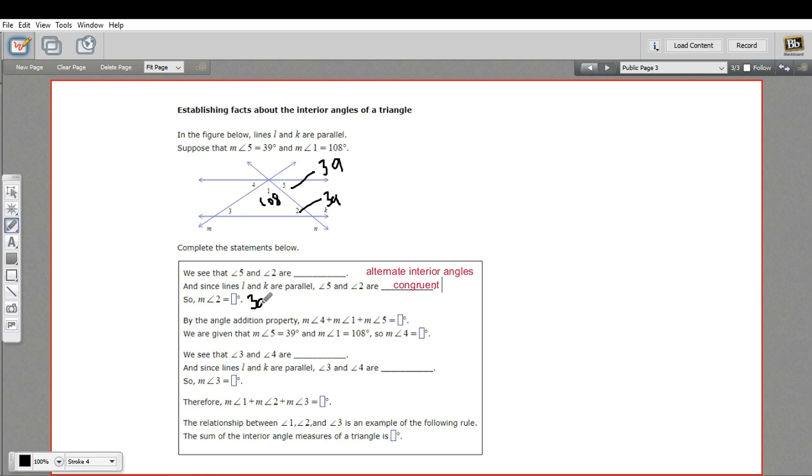Then it says by the angle addition property, the measure of angle four plus the measure of angle one plus the measure of angle five has to equal what? Well, four and one and five are all along this line, so those have to add up to 180 degrees. I guess you'd call that a linear triple instead of a linear pair because there are three angles here, but it's still along a straight line, so it's got to add up to 180.